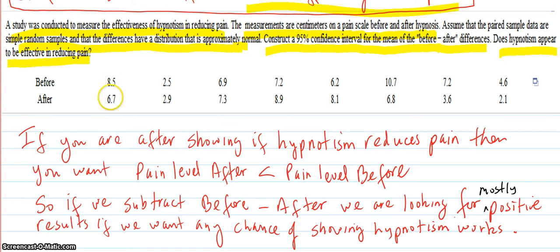In other words, after hypnotism you want a lower number of pain than before. So this is data coming from one person. They measured the person's pain before the hypnotism, then they hypnotized the person and found out that the pain did indeed go down to 6.7. So that looks promising.